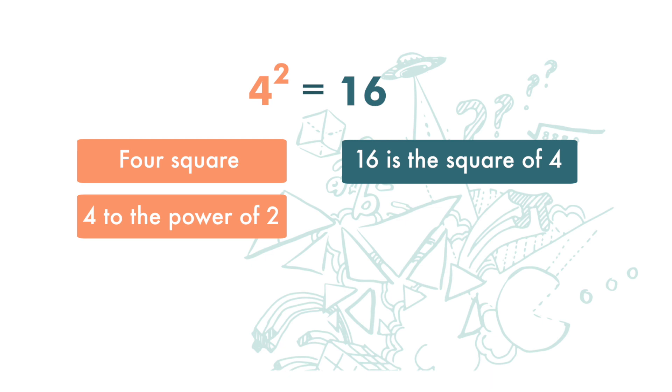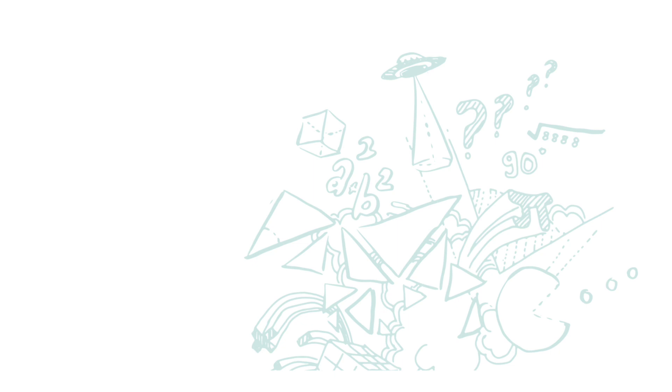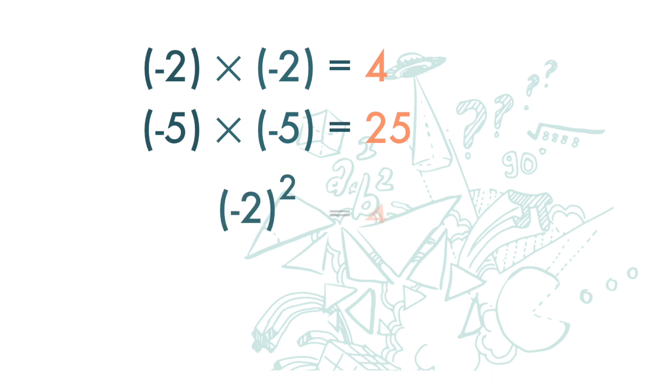Let's look at this: negative 2 times negative 2 is positive 4. A negative times a negative, we get a positive. Similarly, negative 5 times negative 5 is positive 25. We can also put it this way: negative 2 square is equal to 4, negative 5 square is equal to 25.